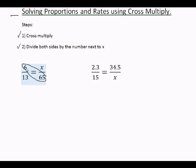So let's cross-multiply. 6 times 65 equals 390. 13 times x is 13x. You put an equal sign between them.